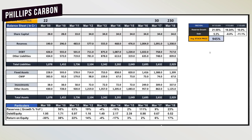First we will start with Phillips Carbon's balance sheet analysis. In 2009, this company's average price was 22, and from 2010 to 2016, we did not see a lot of price momentum. In 2017 the price was 30, primarily due to the increase in demand for graphite products. Looking at share capital, in 2010 this company's equity was 1, diluted slightly in 2011, but from 2012 it has been consistent and has not diluted — a positive sign.